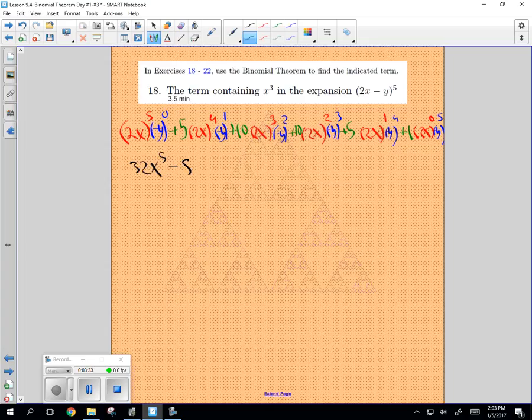So you get 80x to the 4th times y. The next one is going to be 2 cubed is 8 times 10 times positive 1 is positive 80x cubed y squared. And then the next one is going to be negative cubed is a negative. 4 times 10 is 40x squared y cubed. And then we have 2 times 5 is 10 positive 10x y to the 4th. And then the last is just going to be negative y to the 5th.